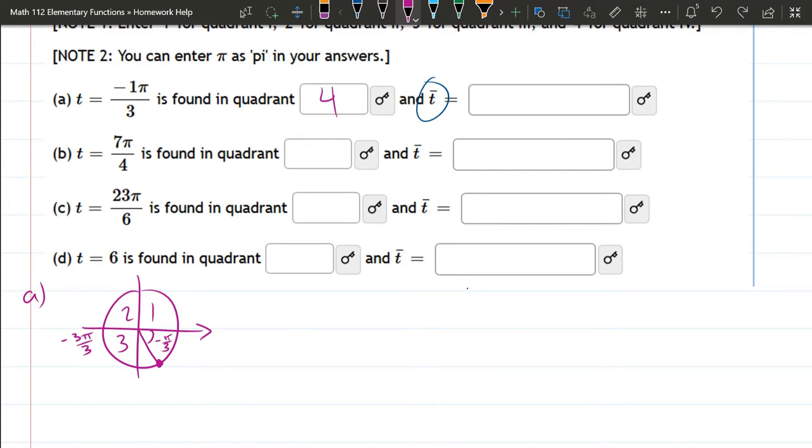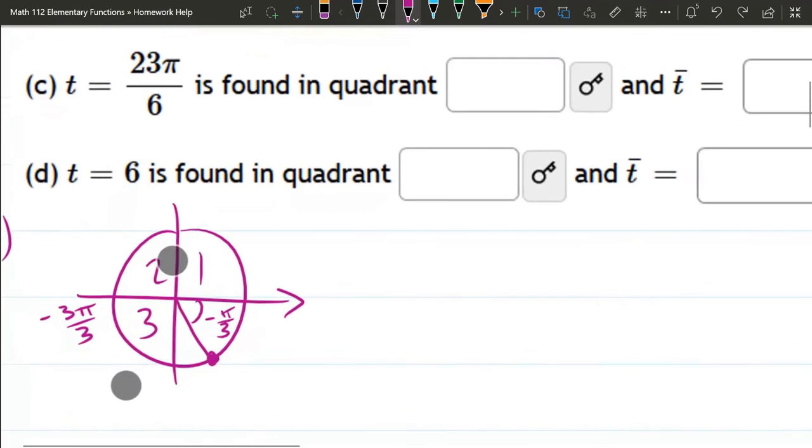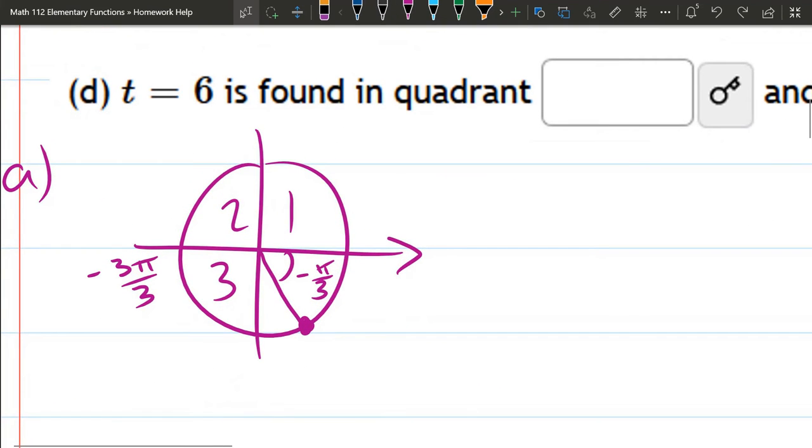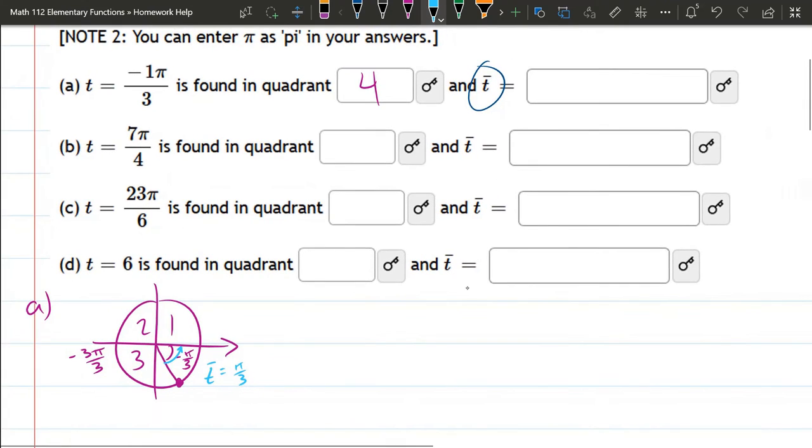So what about t bar? So remember, t bar is the smallest angle, smallest positive angle to the x-axis. And that would be right here. And the positive angle is positive π over 3. So that's t bar positive π over 3.